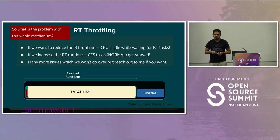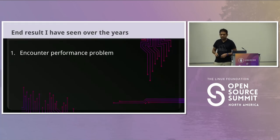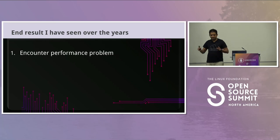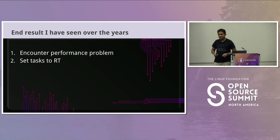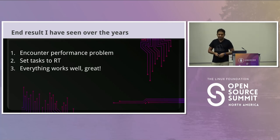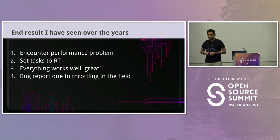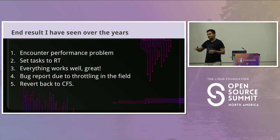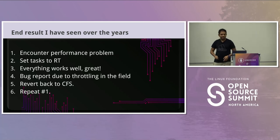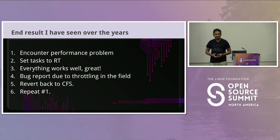This mechanism is horrible and really broken. The result I've seen over the years: a performance engineer encounters a performance problem, starts setting things to RT, everything works well, the product ships. Then there's a bug report due to throttling in the field. I've seen this over and over — people revert everything back to CFS and then repeat. I've seen this cycle over and over again, and that's what made me sick and tired of it. That's why I started looking at it this year to do something about it.